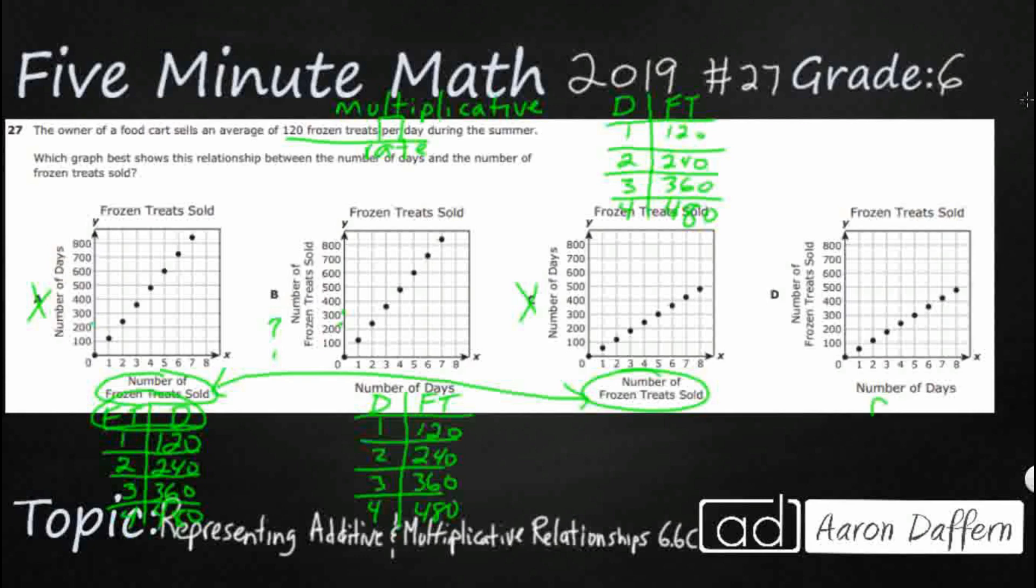They at least have the axes correct here. So day frozen treats. So I've got 1, 2, 3, and 4. So let's see what we have here. So this frozen treats, but that day one is less than 100. That looks like almost 80. Day two looks like a little bit above 100, maybe 110, 120. Day three is a little bit above 200, call it 180.